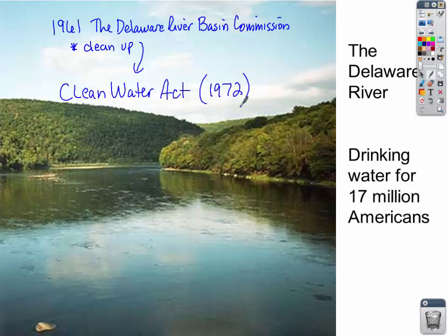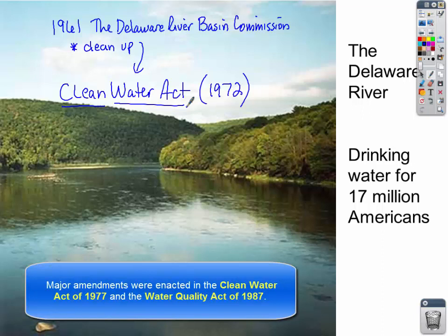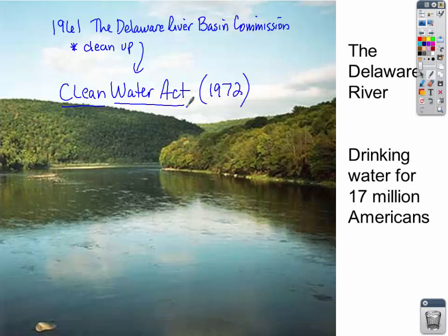The Clean Water Act of 1972 further assisted water pollution efforts and cleanup of the Delaware River. Since the Clean Water Act went into effect to not only clean up pollution in our waterways but also to prevent pollution, the Delaware River has been cleaned. You can think of the Delaware River as being one of the world's best pollution cleanup success stories. In 1972, when environmentalism was basically born, the Clean Water Act was one of its leading pieces of legislation.